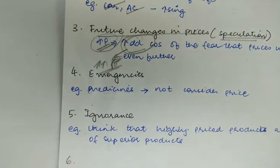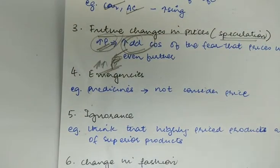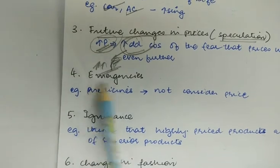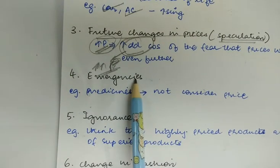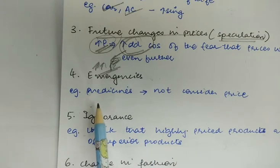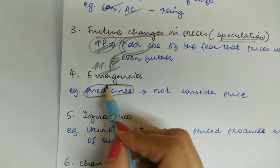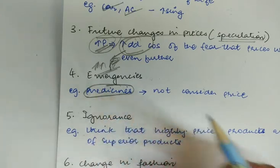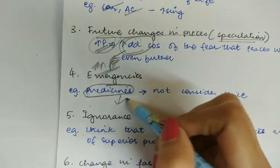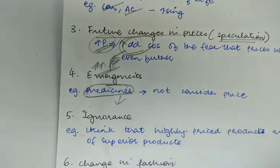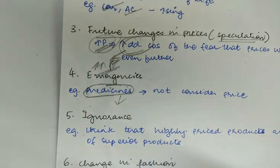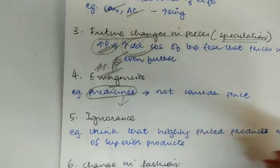The other situation is of emergencies. In case of emergencies, the law of demand does not function. For example, if a patient requires certain kinds of medicines, medicines have to be bought at whatever price they are available, irrespective of the price of the commodity. You will have to buy the medicines because it is a case of emergency.